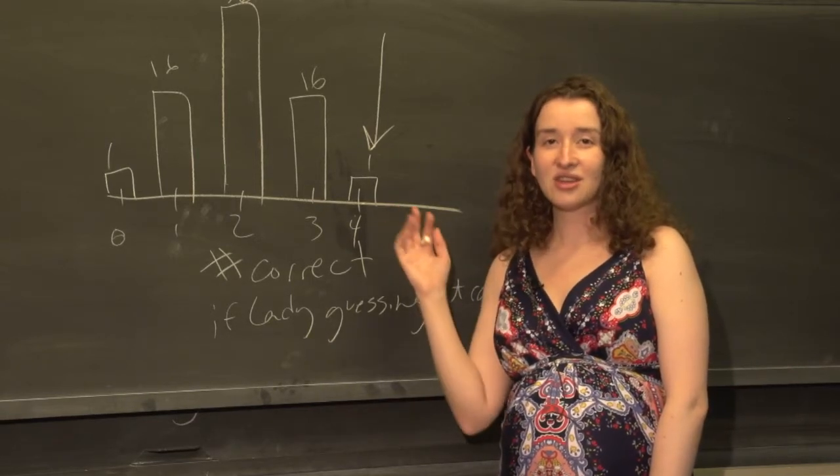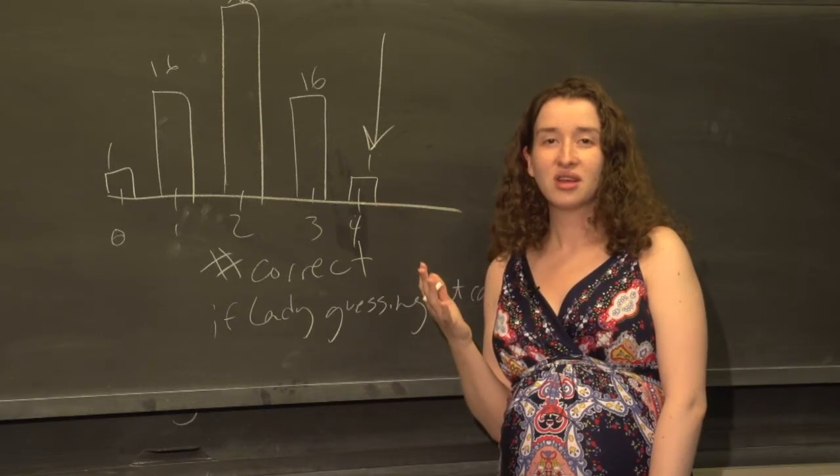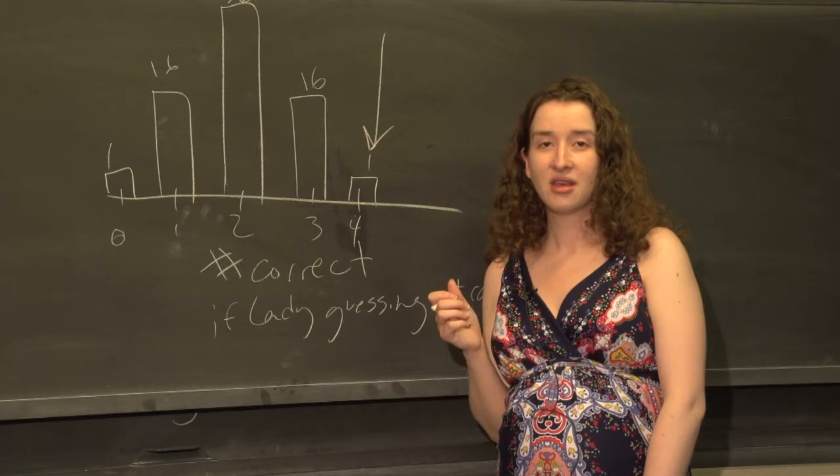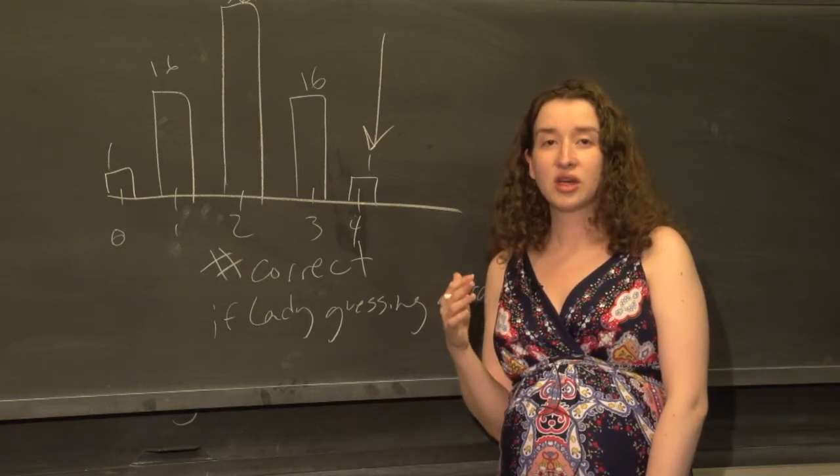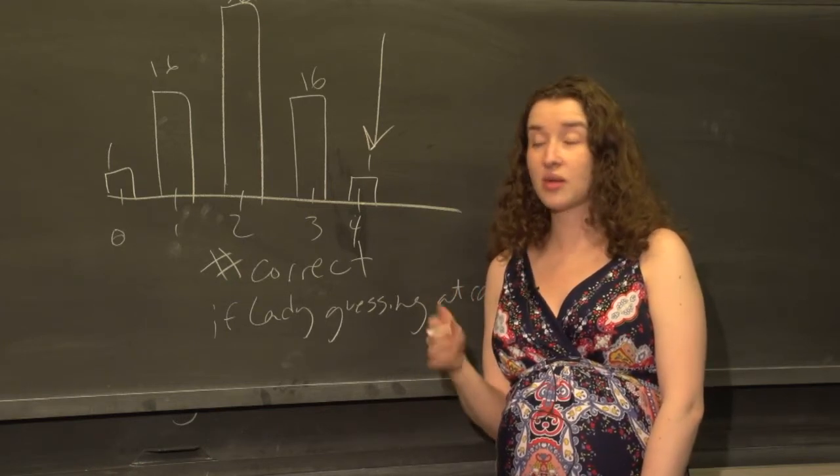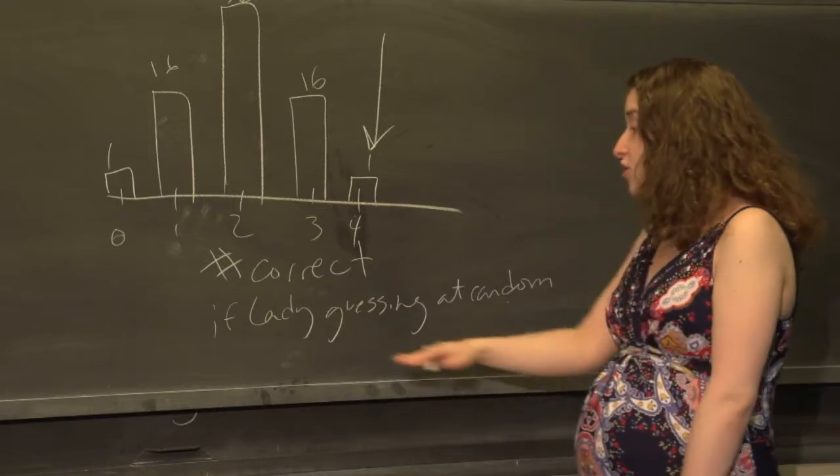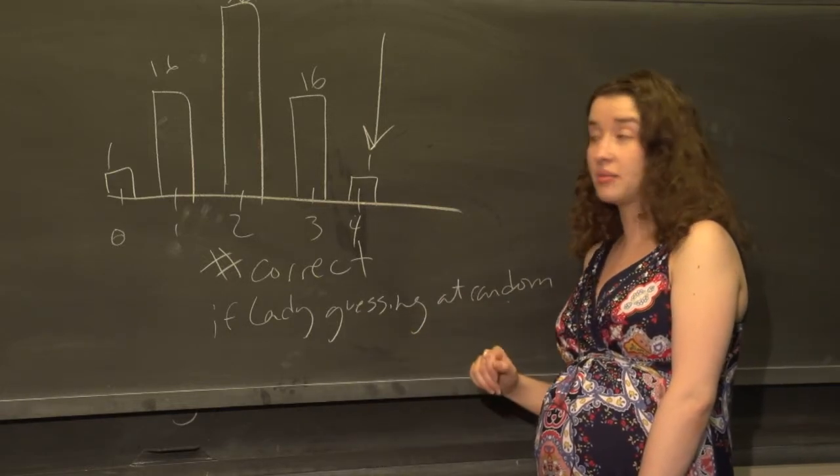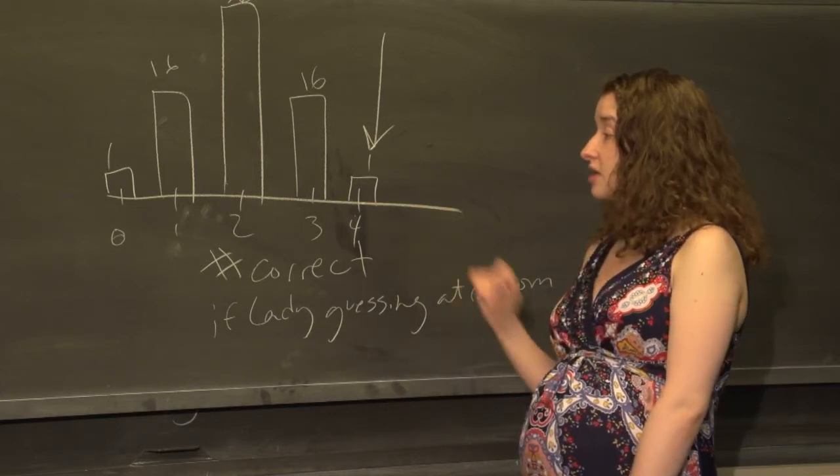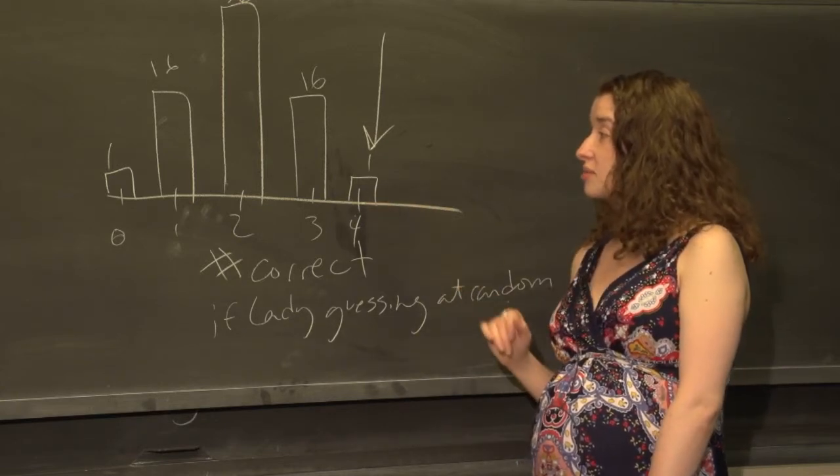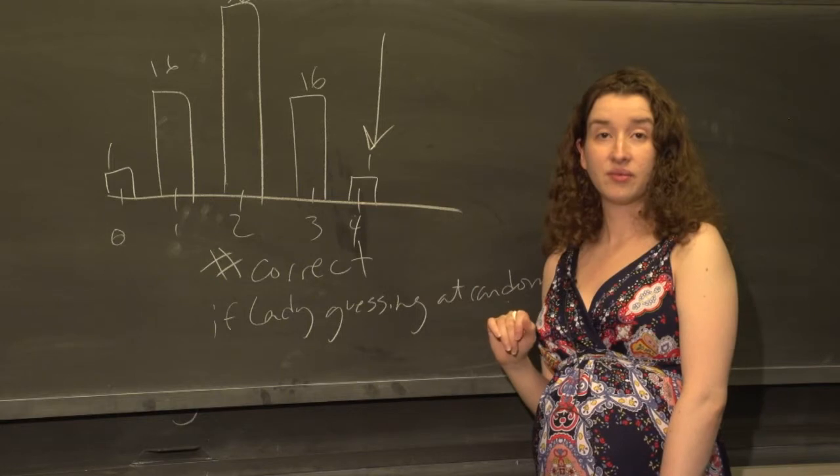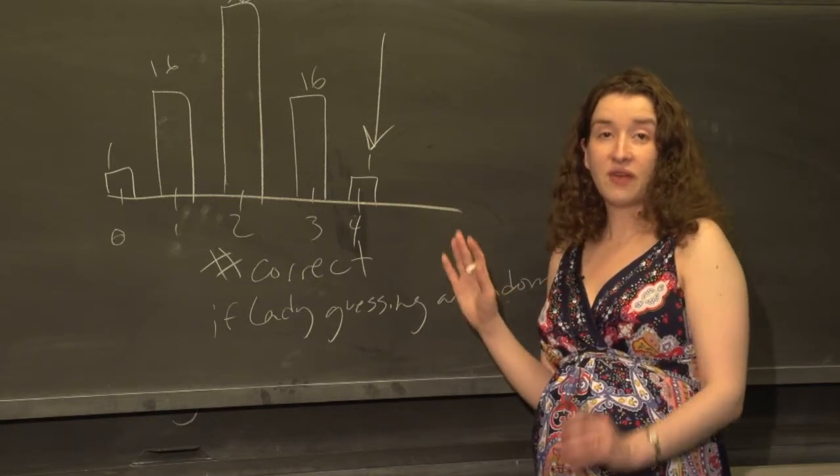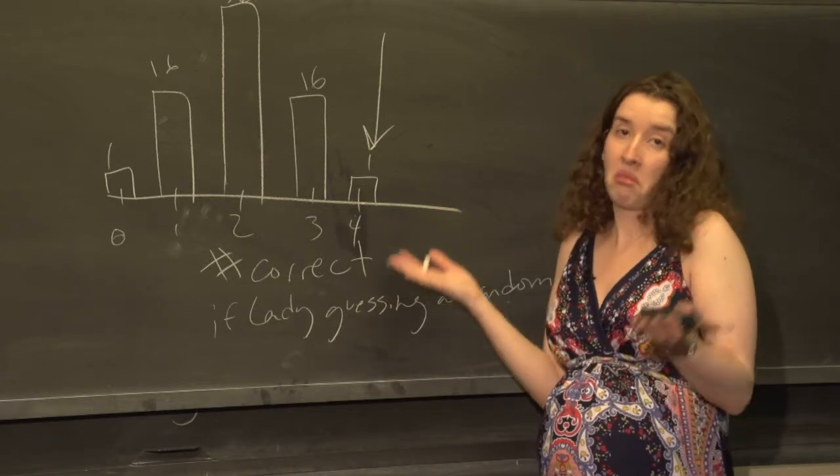So what do we conclude if the lady gets all four correct? Should we conclude that she has this skill or not? The way we think about this question from a hypothesis testing framework is to say assuming that the lady is guessing at random, assuming that she does not have this ability, the probability she would have gotten four cups correct is only one out of 70.